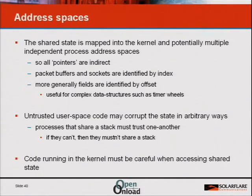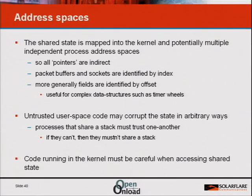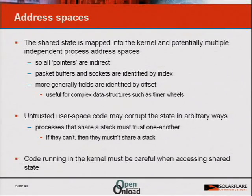We've got moderately complex state living in the kernel and potentially multiple processes, and there's no way to arrange that this shared state is mapped into the same address range in all places. Therefore it cannot contain any pointers at all — everything in the shared state is indirected. In some cases it's indirected at a fairly high level using indexes, found by a simple indirection from the base of a memory map. For more complex things like linked lists, we encode pointers as offsets relative to some well-known pointer. Each address space that has the shared state will have a variety of pointers into the bits of shared state that are mapped separately.